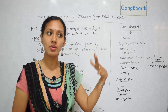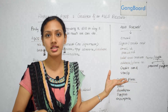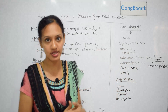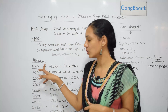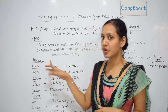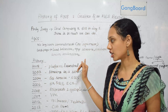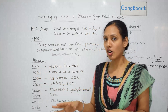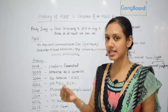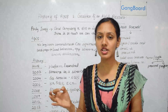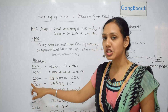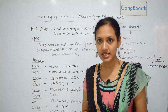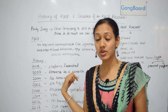Now let's see how AWS has emerged over the years — the history of AWS. In 2002, the AWS platform was first launched. Then in 2003, the idea of selling servers as a service in the cloud was first formulated by AWS. In 2004, the first AWS service was released to the public — that is SQS.